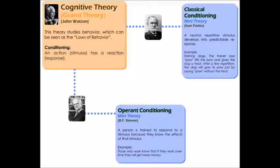The second mini theory is operant conditioning, proposed by Skinner. A person is trained to respond to a stimulus because they know the effects of that stimulus. For example, workers know that if they work overtime they will get extra payment, so they work because they know what benefit they will receive in return. This is the operant conditioning theory.